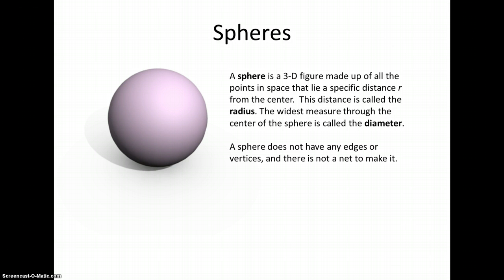A sphere does not have any edges or vertices. We don't consider it having any faces, although you could argue that it has one lateral face. We usually just call that the surface area of a sphere. And there is not a net that you could cut out, fold up, and tape to make the shape.